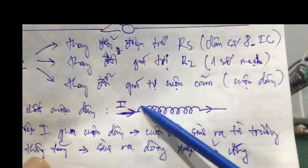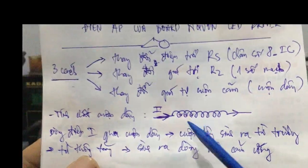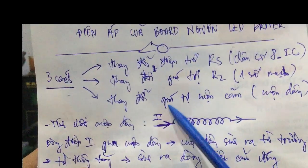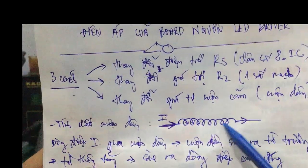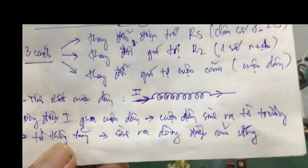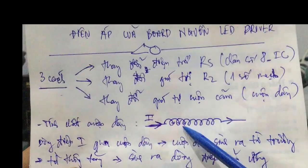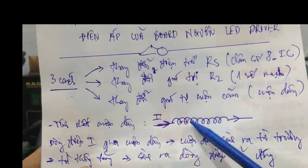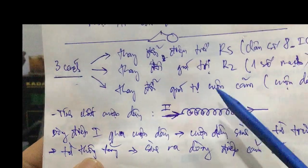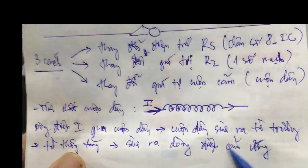Khi mà có cường độ dòng điện đi qua cuộn dây, nó sẽ sinh ra một từ trường. Từ trường sinh ra các đường sức từ - trong vật lý hay khi nghiên cứu chuyên sâu các bạn sẽ thấy - nó chạy dọc, các đường sức từ ở trên đi xuống, bao bọc xung quanh cuộn dây này, làm cho từ thông tăng lên, đồng thời sinh ra dòng điện cảm ứng.